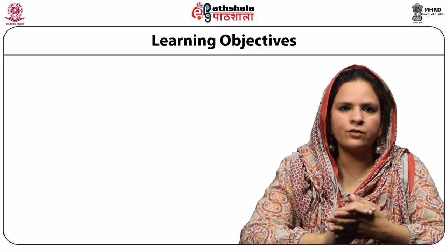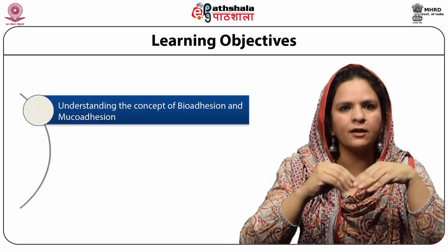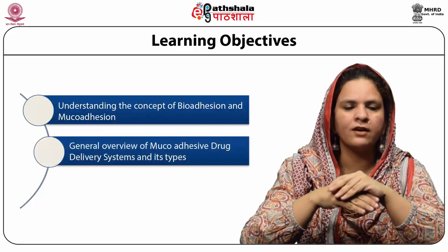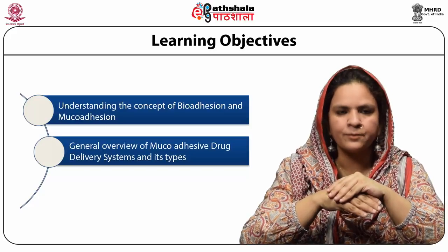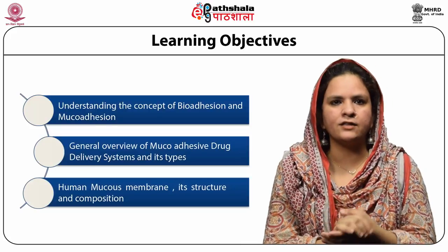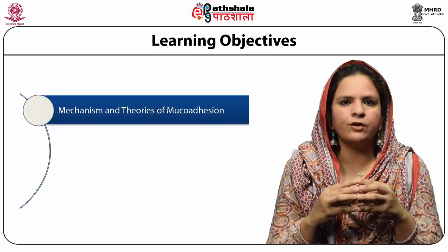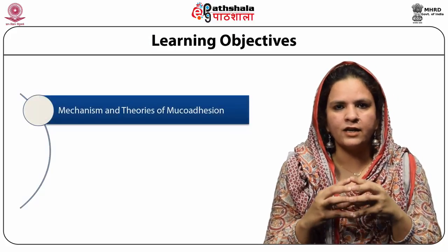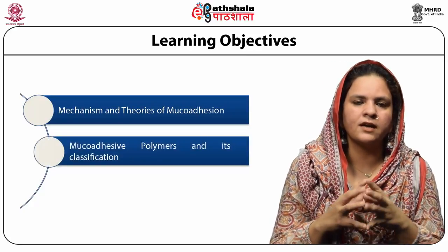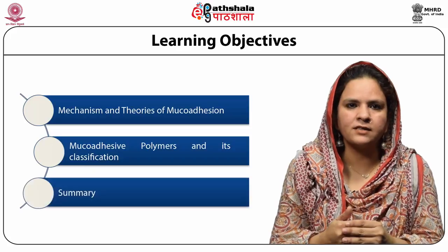The learning objectives: today we will start with understanding the concept of bioadhesion and mucoadhesion. Then we will go in for the overview of mucoadhesive drug delivery systems and its types. We will talk about the human mucus membrane, its structure and composition. Later, we will deliberate upon the mechanisms of mucoadhesion and the various theories associated with it, as well as the various types of polymers, their classification, and finally summarize the presentation.